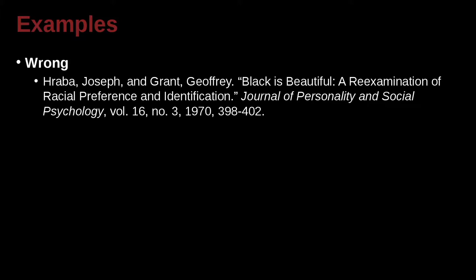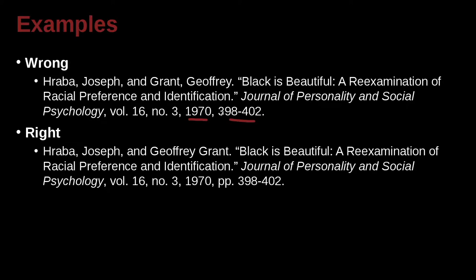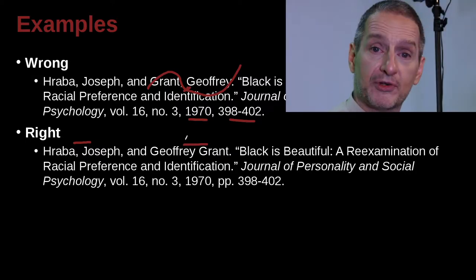Here we have another example: Braba, Joseph, and Grant — see all three authors. 'Black is Beautiful: A Re-examination of Racial Preferences and Identification' inside the Journal of Personality and Social Psychology, with a volume number, issue number, year, and page numbers. The very first problem is the name of the second author — we have the name with a comma, meaning surname then given name. In MLA, for the first author you reverse the name, but for the second author you do not reverse.